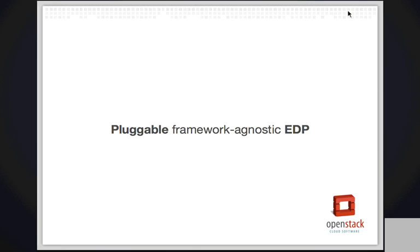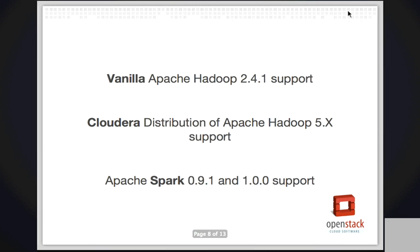We're going to implement new plugins for new and popular data processing frameworks. Regarding supported distributions and frameworks changed in Juno: we started supporting the 2.4 branch of Apache Hadoop. A brand new plugin was added to support the CDH distribution of Apache Hadoop for the 5.4 branch. We also started supporting the Spark data processing framework, which was the first non-Hadoop plugin for Sahara, and it tested the plugin mechanism very well since Spark is a completely different thing.